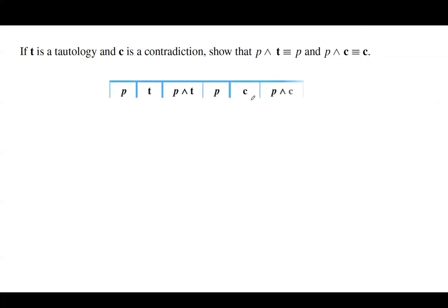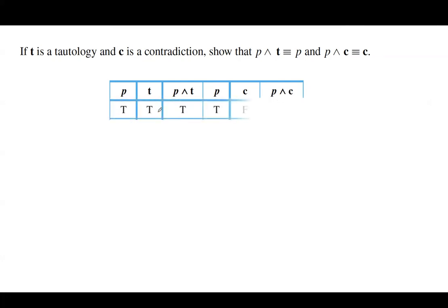Let us form our truth table. We have P, tautology, P AND tautology, and then P, contradiction, and P AND contradiction. If P is true, the tautology is always true. True AND true is true — same as P. The contradiction is always false, so P AND false is false. So far, contradiction and P AND contradiction have the same truth values.